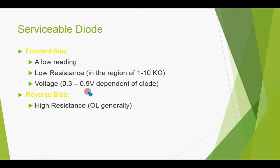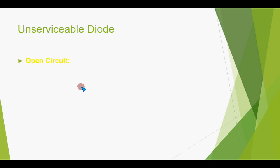If connected in reverse bias, a serviceable diode will present a very high resistance and the overload indication will be shown on the screen. Another indication in forward bias is that the digital multimeter will create a brief beep, indicating that the diode is serviceable in forward bias.